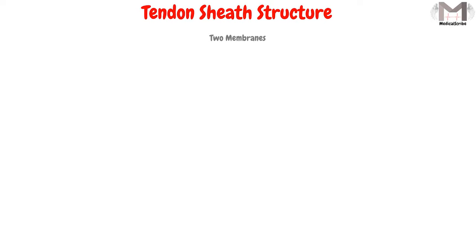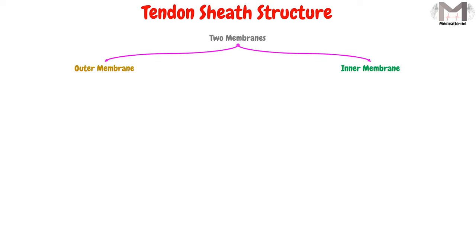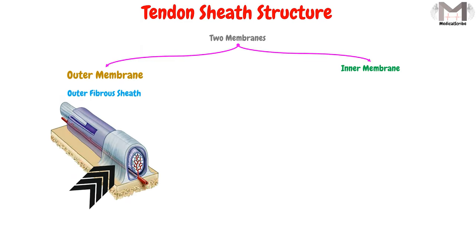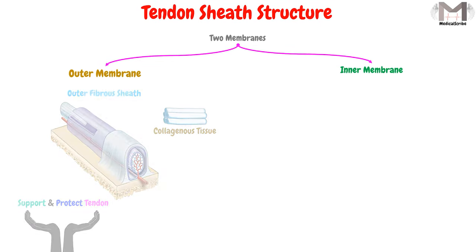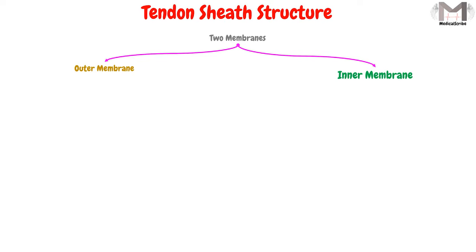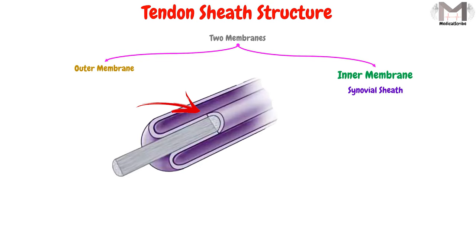If we explain the sheath's structure, we find that it is structured from two membranes: an outer membrane and an inner membrane. The outer membrane is called the outer fibrous sheath, which is made up of collagenous tissue and will support and protect the tendon. The inner membrane is called the synovial sheath.